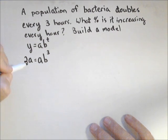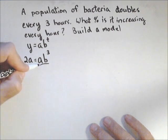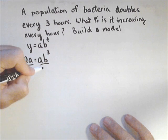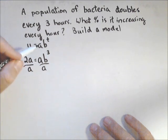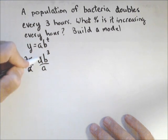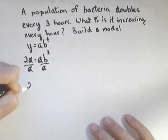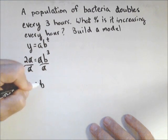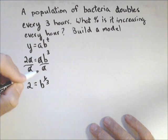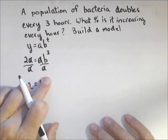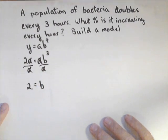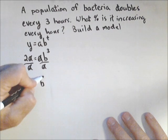Even though we didn't know the initial amount, we can actually solve this, because I can divide both sides by a, and those cancel. And I get 2 equals b to the... excuse me, b to the three. I'm getting a step ahead. Equals b cubed.